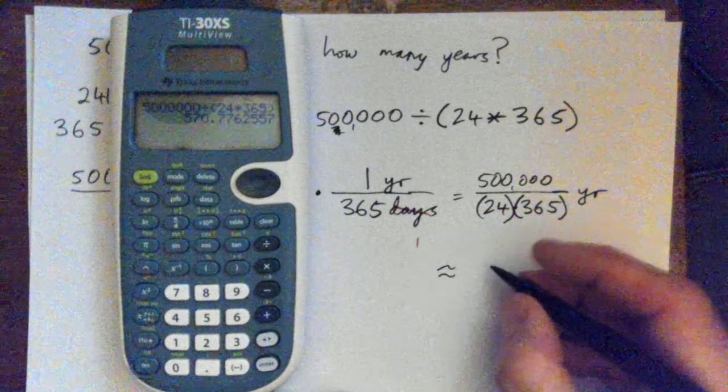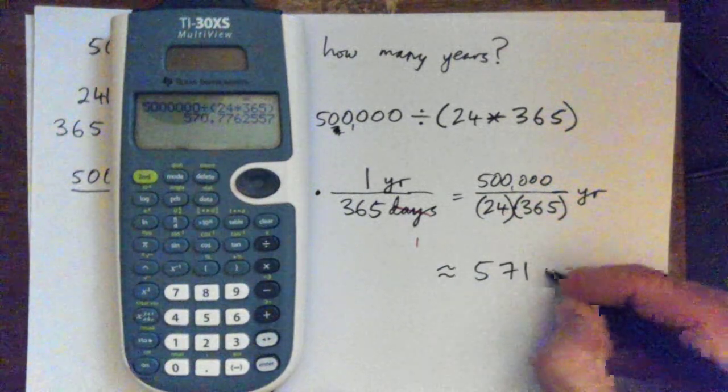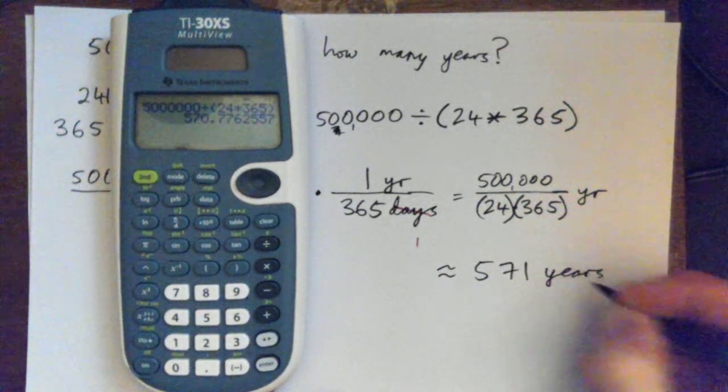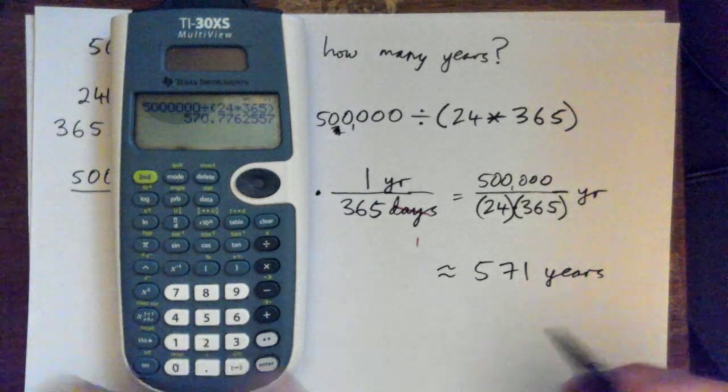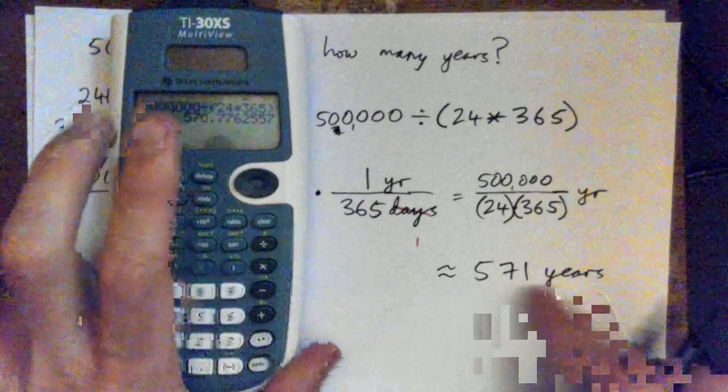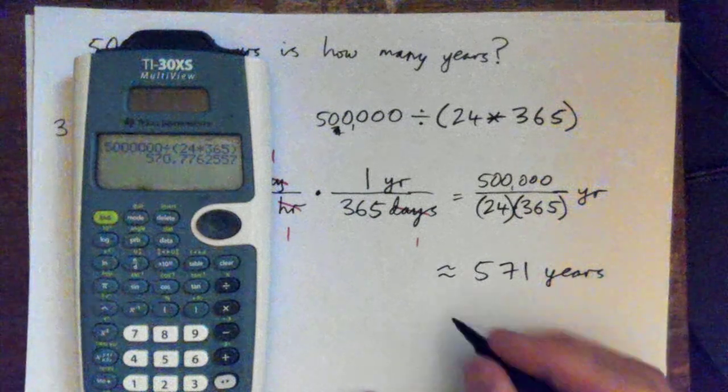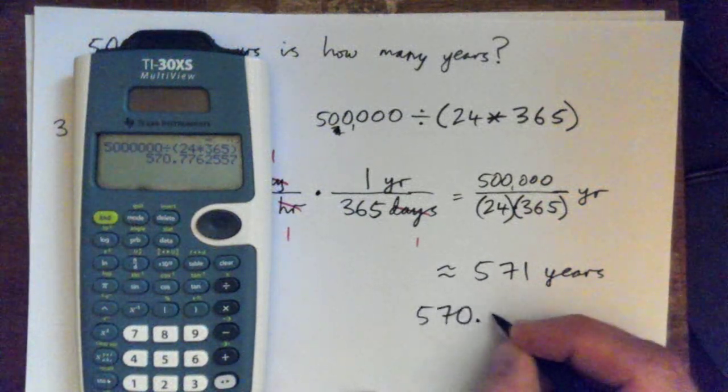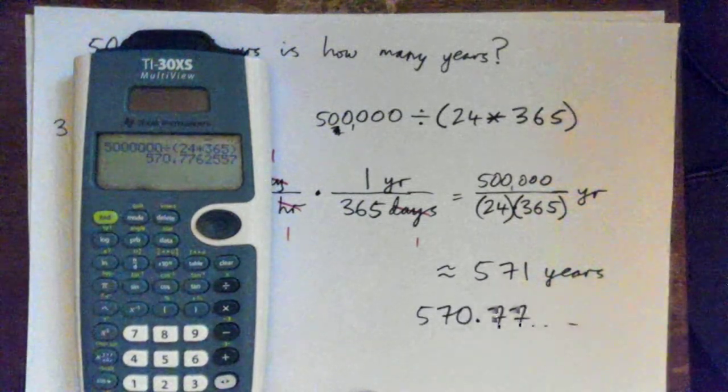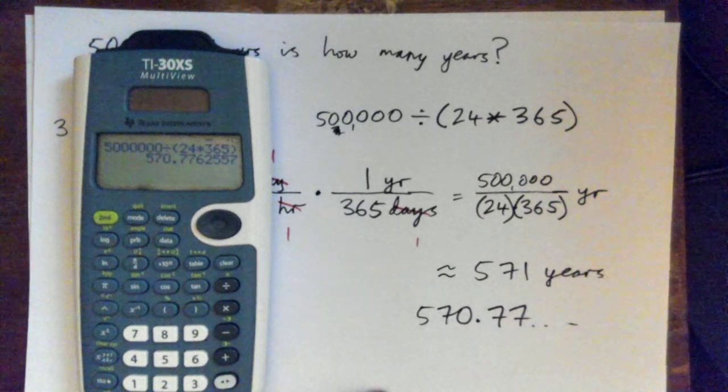Approximately 571 years. It's 570.77, but approximately 571 years, rounded to the nearest year, because it was 570.77 years, so we rounded up to 571, right?